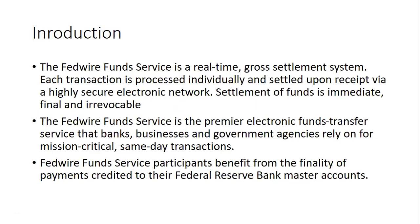Let's understand the introduction to FedWire first. The FedWire Funds Service is a real-time gross settlement system where each transaction is processed individually and settled upon receipt over a high-security electronic network. Settlement of funds is immediate, final, and irrevocable — similar to India's RTGS system. In the US, we call it FedWire, where payments are settled one-to-one as soon as a payment is initiated from a FedWire participant bank's customer.